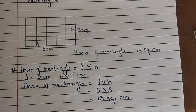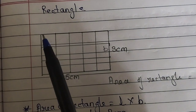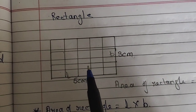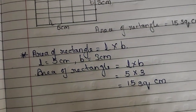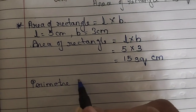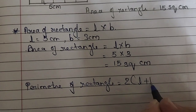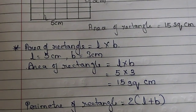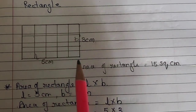Now we will learn about the perimeter. The sum of all the sides of an object is called its perimeter. To find the perimeter of a rectangle, we have the formula 2(L + B). Let me explain how we get this formula. In a rectangle, opposite sides are equal — if this side is 5 cm, the opposite side is also 5 cm.